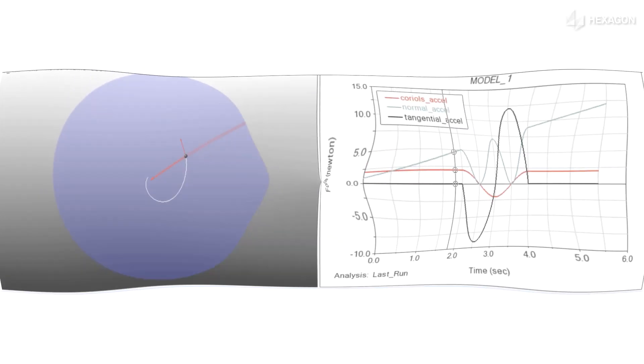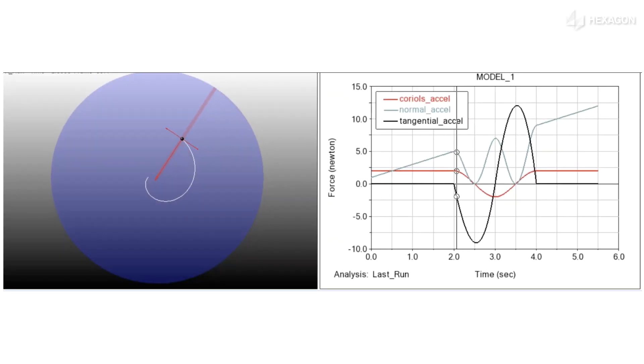In this animation, we see a particle moving at constant speed away from the center of the disc. We also see the spiral trace that the particle makes in the ground reference system. The relative velocity has been chosen such that the Coriolis acceleration, the red curve, is the same as the rotational velocity.